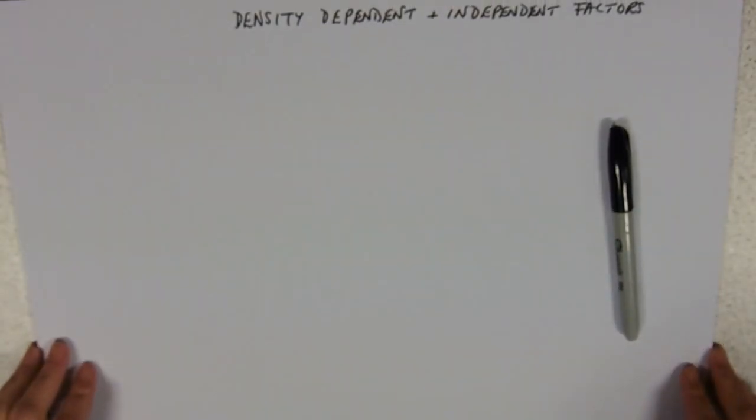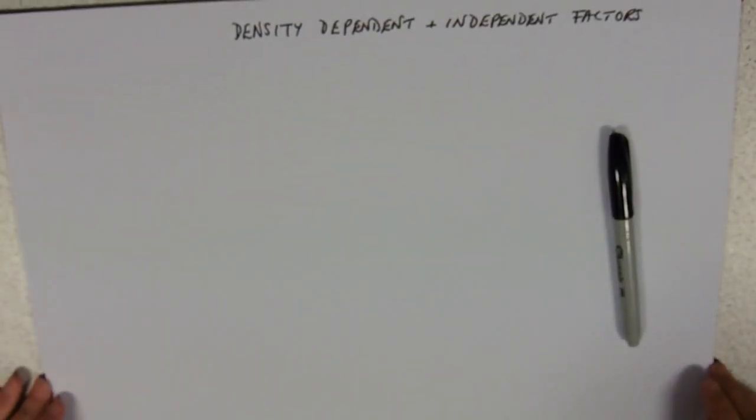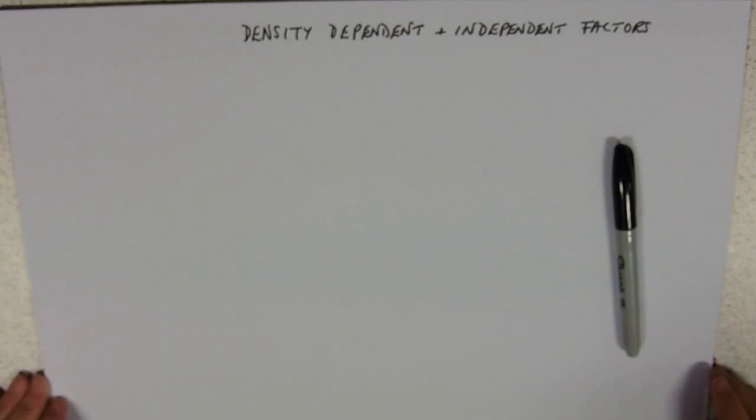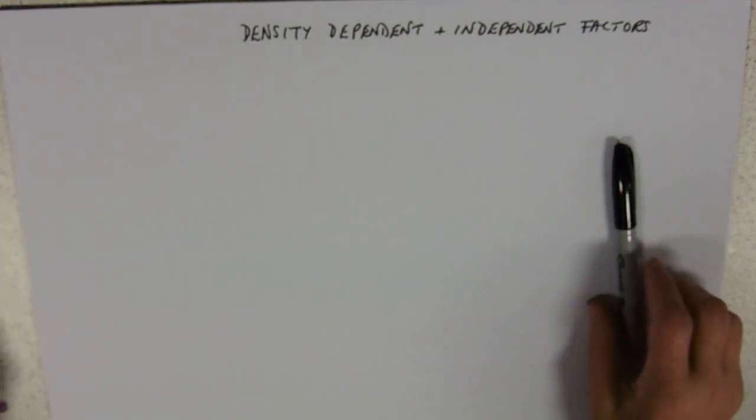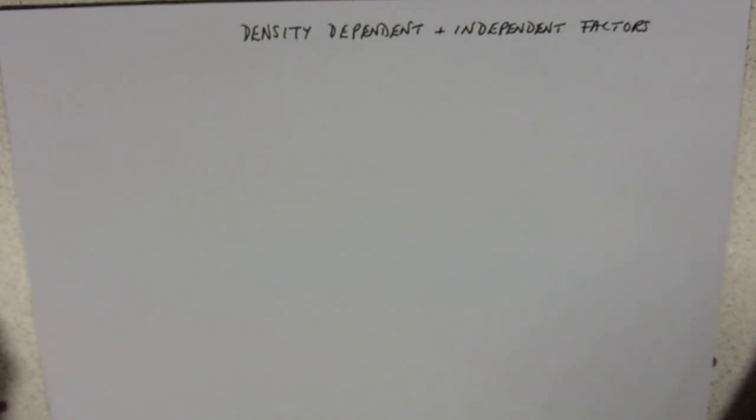This video is about density dependent and independent factors, which are the two most poorly defined terms in ecology by students. Generally the staff know what they're doing, students not so much. You do need to learn these, and I can recommend Quizlet for proper definitions. I think the primary cause of getting it wrong is to get the cause and effect the wrong way round, so I'm just going to do the right way round.